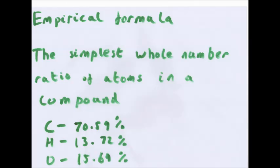Empirical formula - you've probably done this in unit one but I will go over it anyway. Empirical formula is the simplest whole number ratio of atoms in a compound. That's all it is and this is how you work it out. I'll do a step-by-step guide. So here's a question. Carbon 70.59%, hydrogen 13.72%, oxygen 15.69%. Now what you do is you treat the percentages as grams.